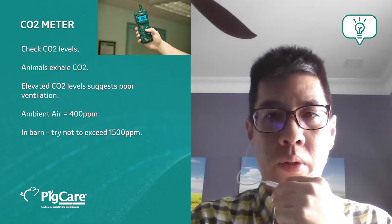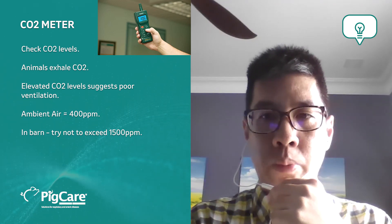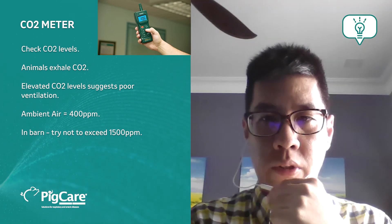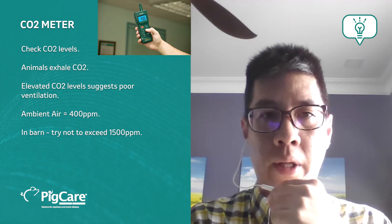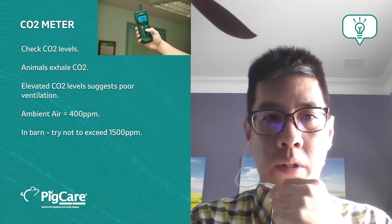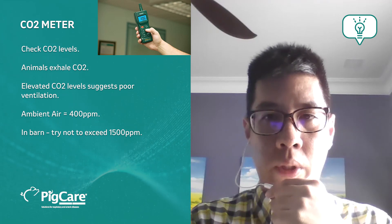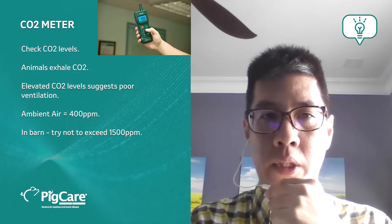Here on the right, we have a photo of a CO2 meter. A CO2 meter, as the name suggests, allows us to measure CO2, carbon dioxide levels. Animals exhale carbon dioxide, and so when ventilation is poor, carbon dioxide builds up rapidly and we can measure this on our CO2 meter.